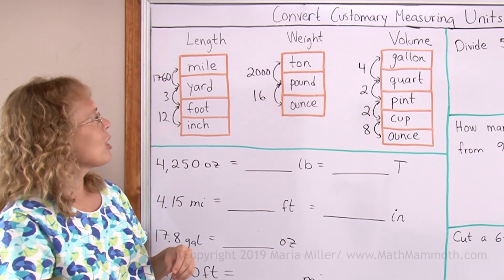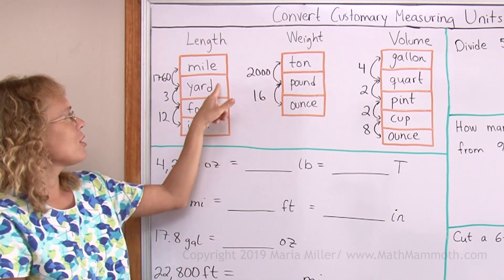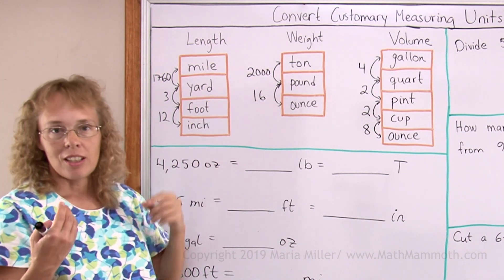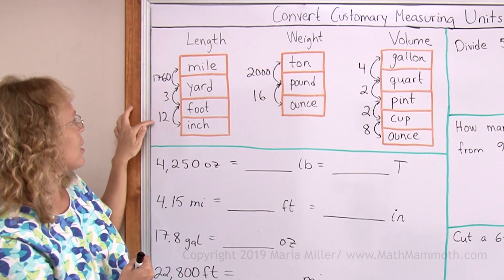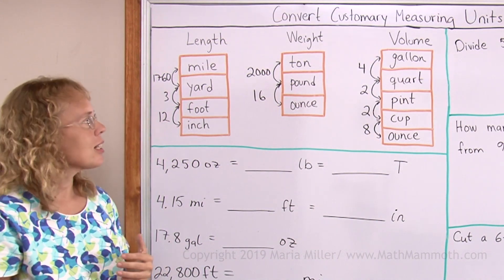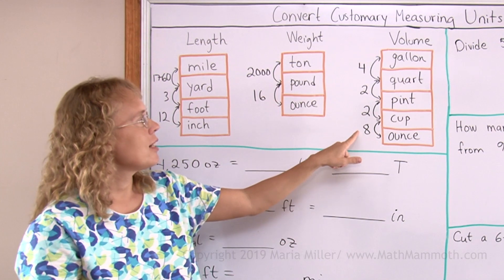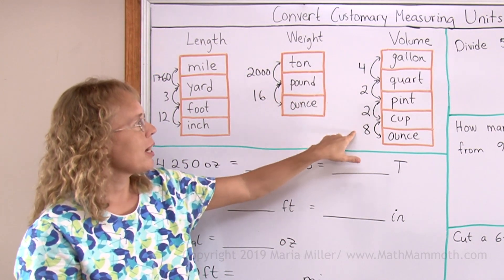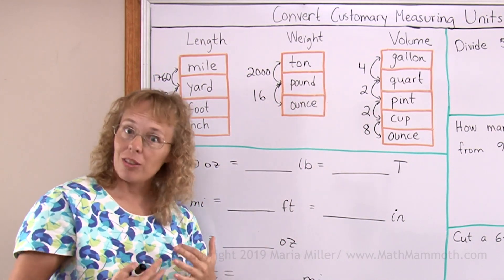And then if you are going for example from inches to yards, then your conversion factor would be multiplied here. 3 times 12 would be 36. Or if you go from ounces to quarts, then your conversion factor would be 8 times 2 times 2 or 32.